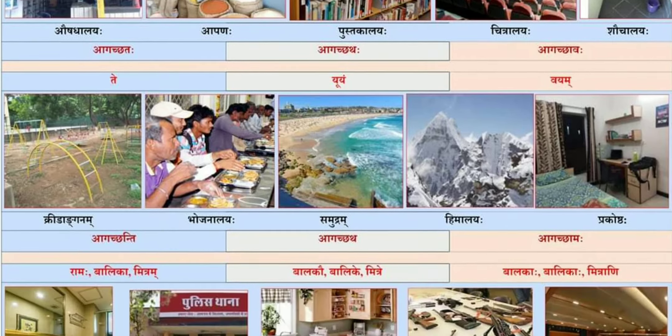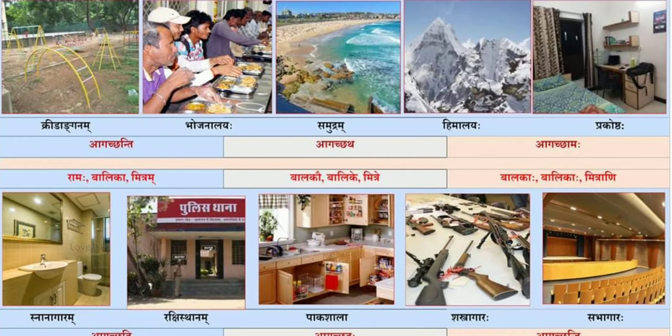Then I will teach you the third line. Third line, first picture means hotel. Third picture: Samudram. Samudram means ocean.